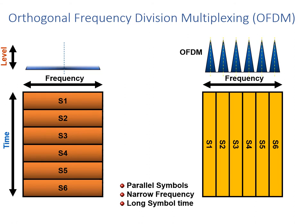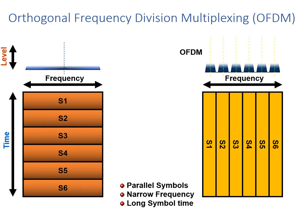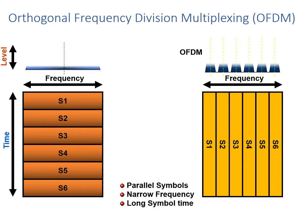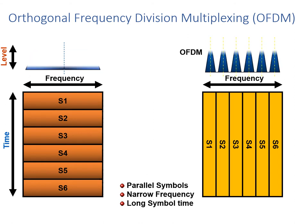This has a major advantage when receiving the signals. It's much easier for the receiver to pull in each one of the symbols. Even if the signal degrades somewhat, we've got a far better chance of pulling in one of those symbols due to the fact that each symbol is transmitted for a much longer period of time. This is very important when working in MIMO type environments.